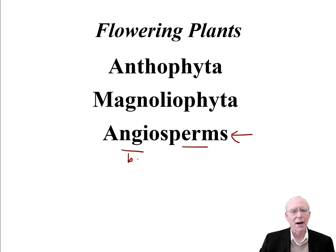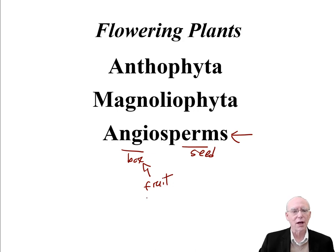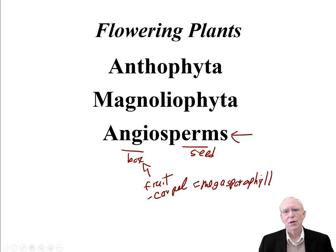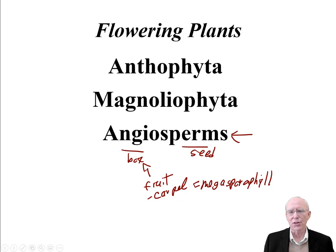Angio means box, sperm means seed, so these are the plants that have an enclosed seed — and the seed is enclosed in the fruit. The fruit comes from a carpel, and a carpel is the same as a megasporophyll. So in the angiosperms, the seeds are enclosed in megasporophylls, or carpels, that develop into the fruit. Those are the boxes of this name — the boxed plants.